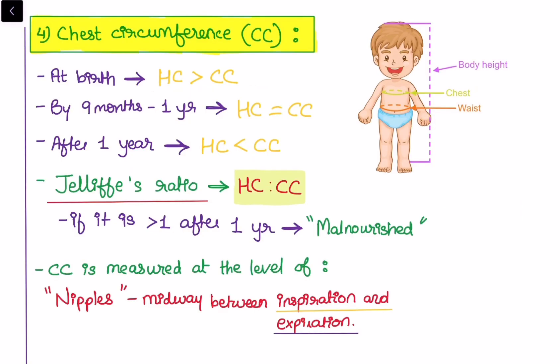The fourth parameter is chest circumference. By birth, the head circumference is larger than the chest circumference by 3 cm. By 9 months to 1 year, head circumference becomes equal to chest circumference. After 1 year, head circumference must be less than chest circumference. There is a parameter called the cellophage ratio — head circumference to chest circumference ratio. If it is greater than one after 1 year, the baby will be called a malnourished baby. Chest circumference is measured at the level of the nipples, midway between inspiration and expiration.